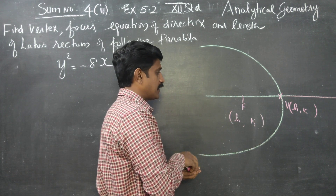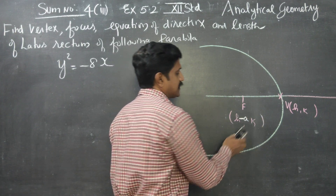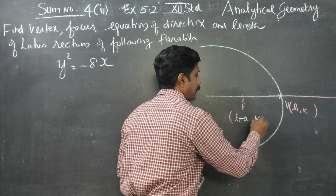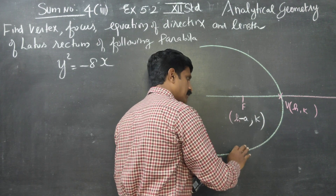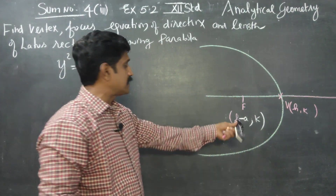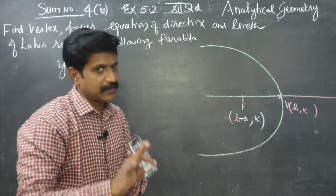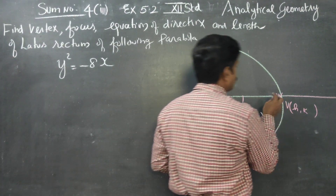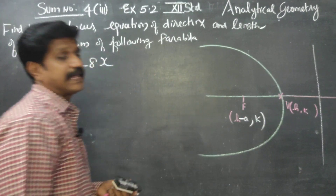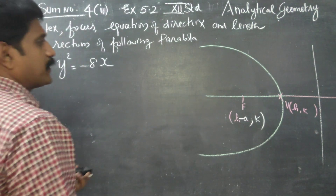Since it opens leftward, the focus becomes (H minus A, K). The directrix is a line passing at equidistance from the vertex and focus — at the same distance from the vertex as the focus, there is a line called the directrix.